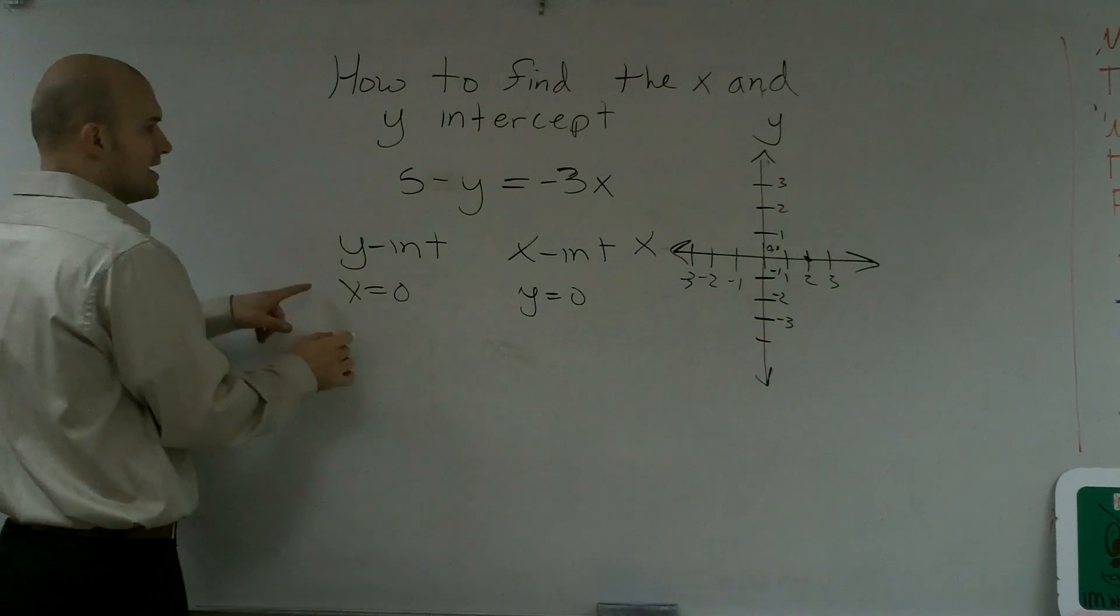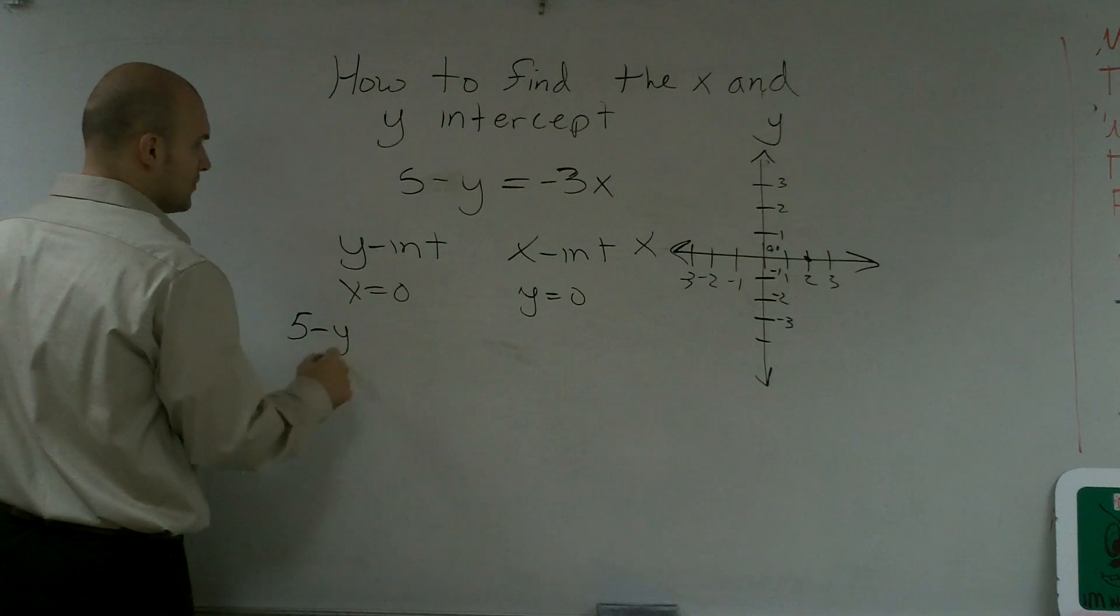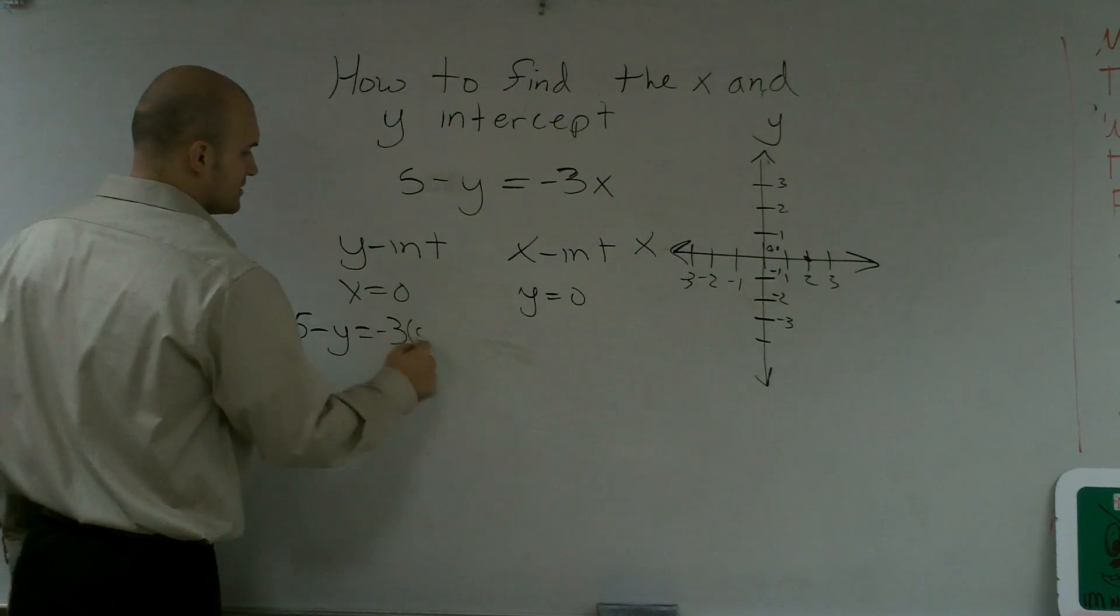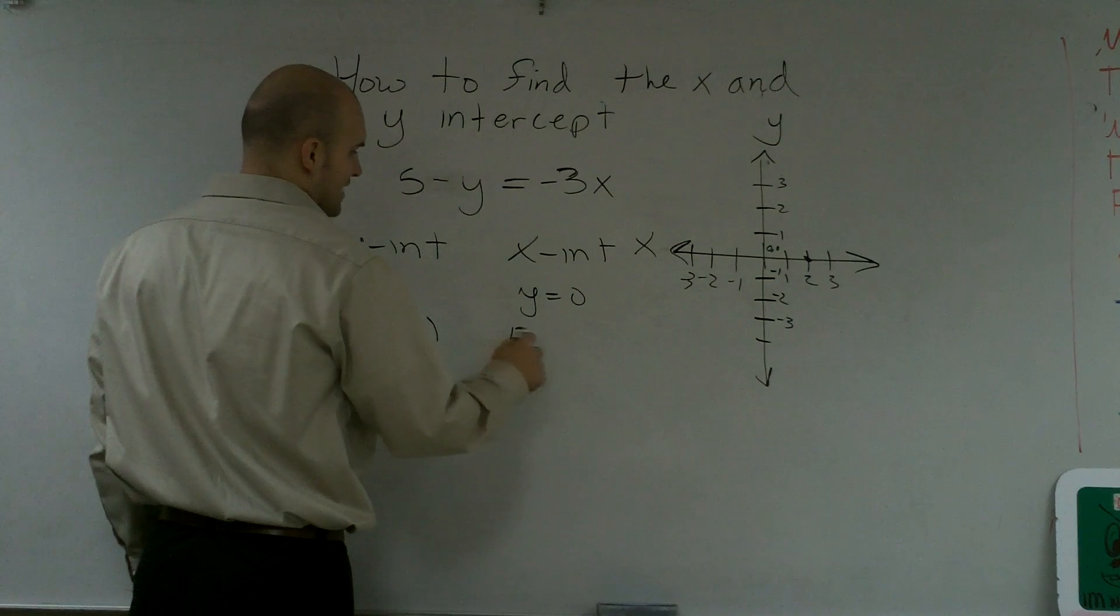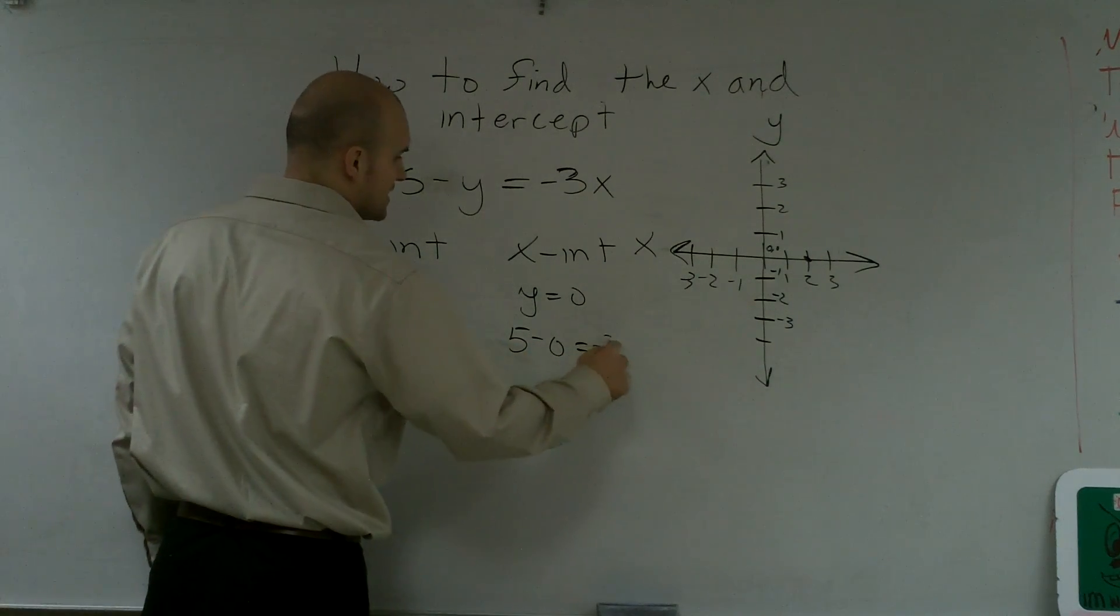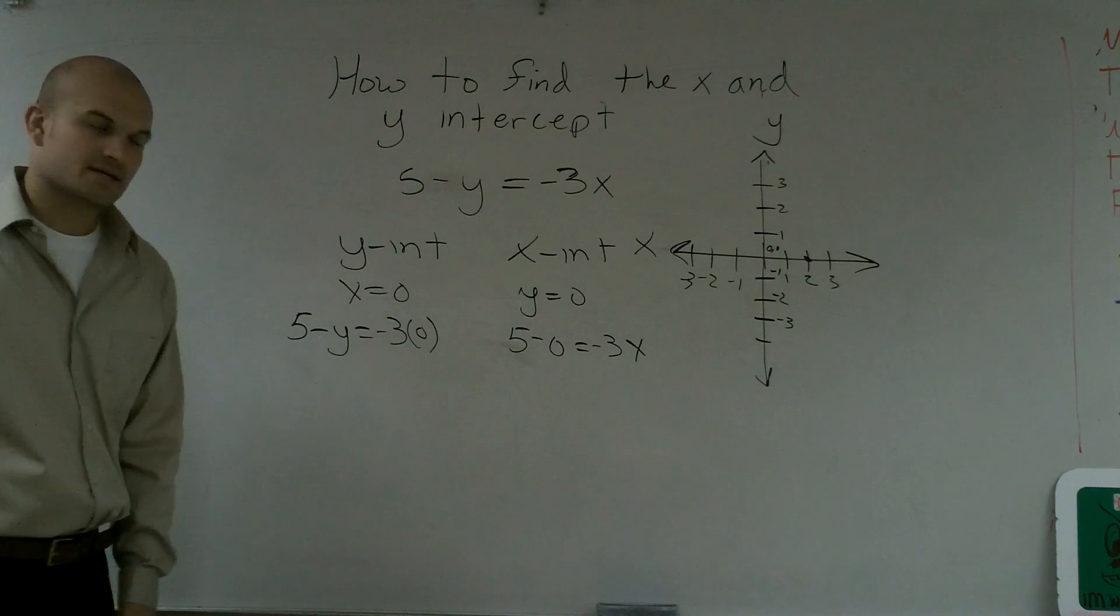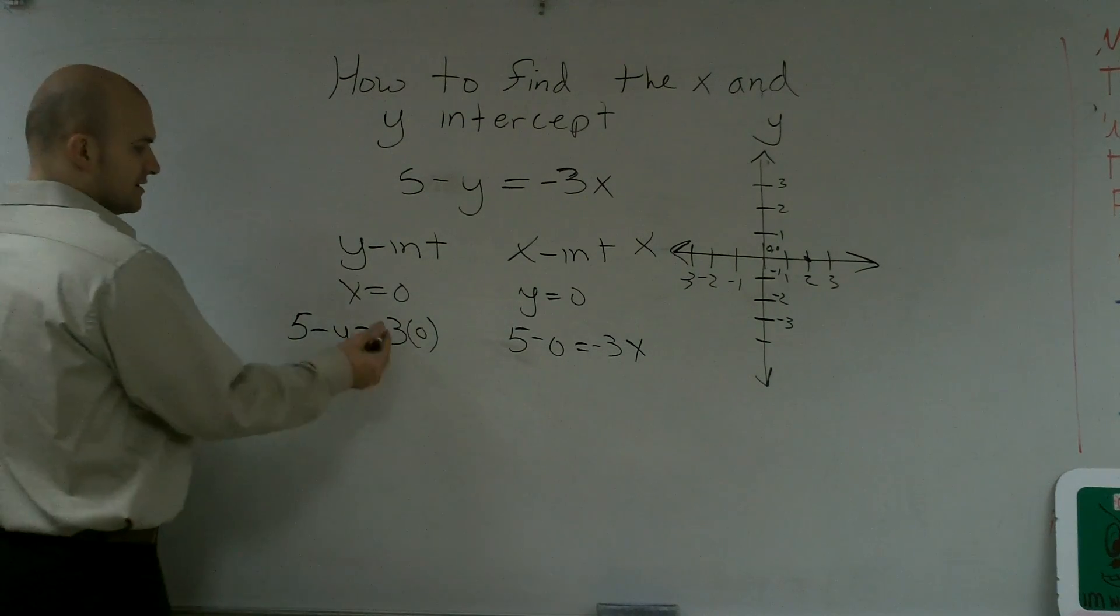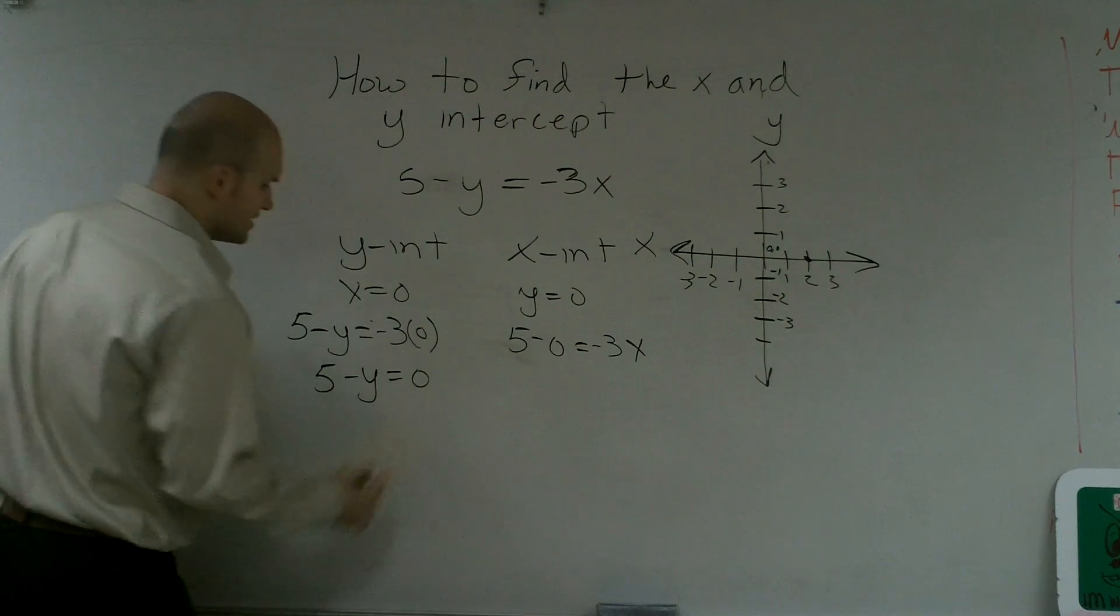So to solve this problem, if I want to find the y intercept, I just plug zero in for x. So I have 5 minus y equals negative three times zero. Y equals zero. I have 5 minus zero equals negative three x. Now, it's just going to get back to your simple math. This goes out to zero. 5 minus y equals zero.